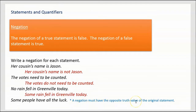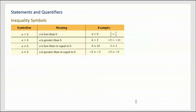A negation must have the opposite truth value of the original statement. So if 'some people have all the luck,' then 'no people have all the luck' would negate that statement. Sometimes that can be a little bit confusing, and we will revisit that idea in a minute.